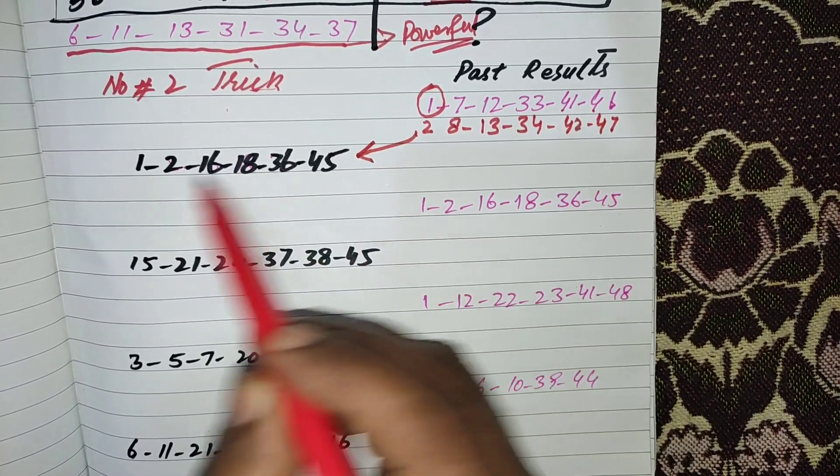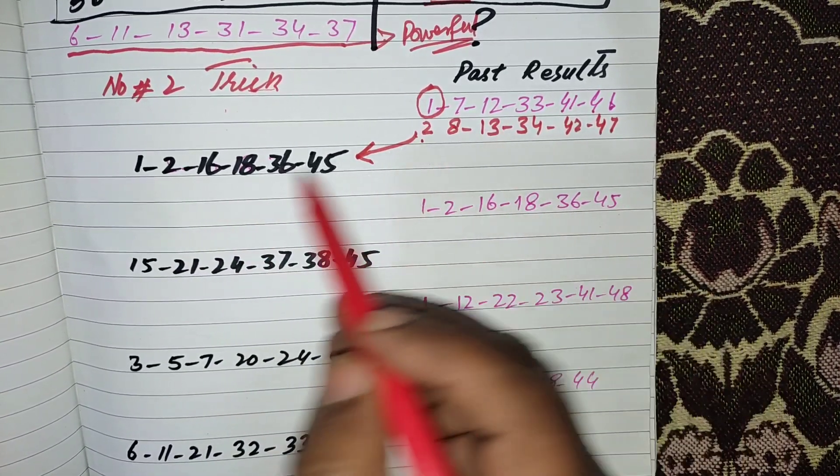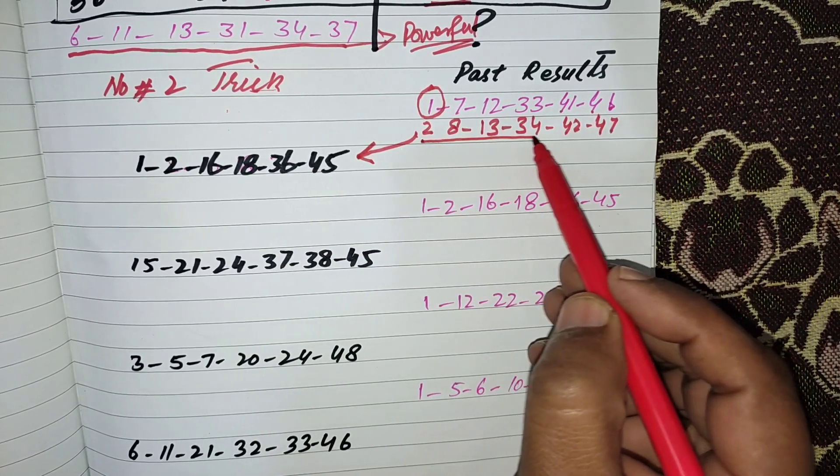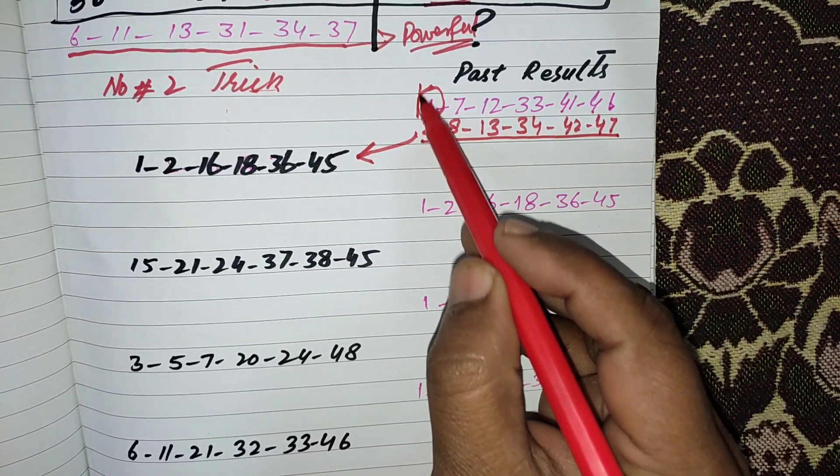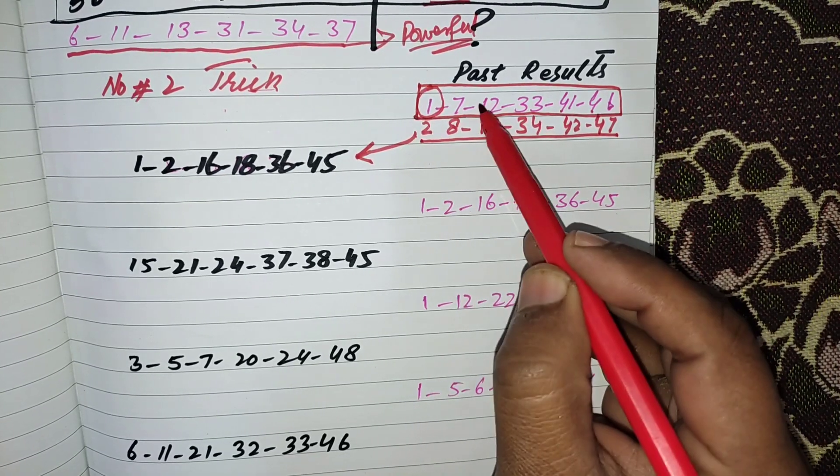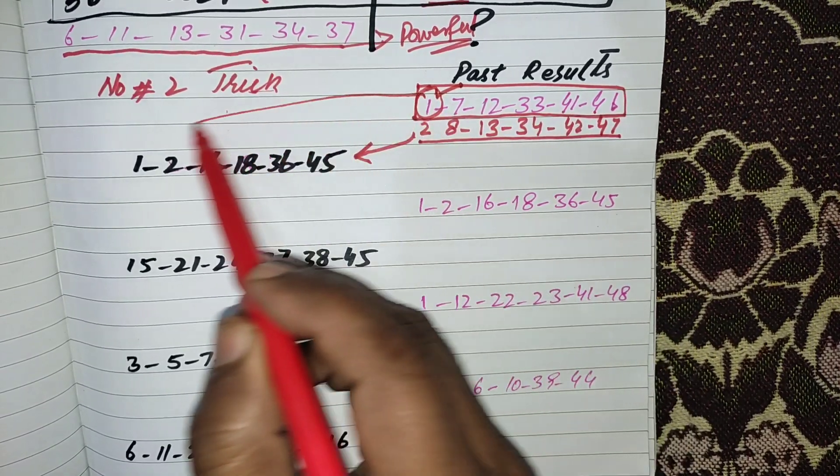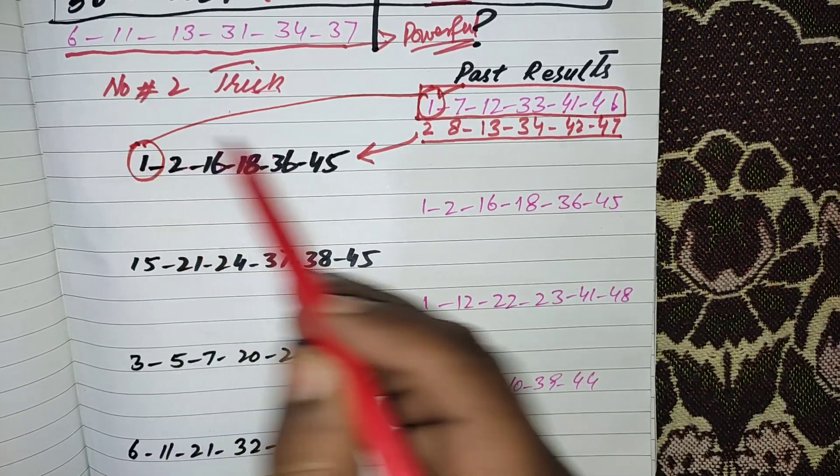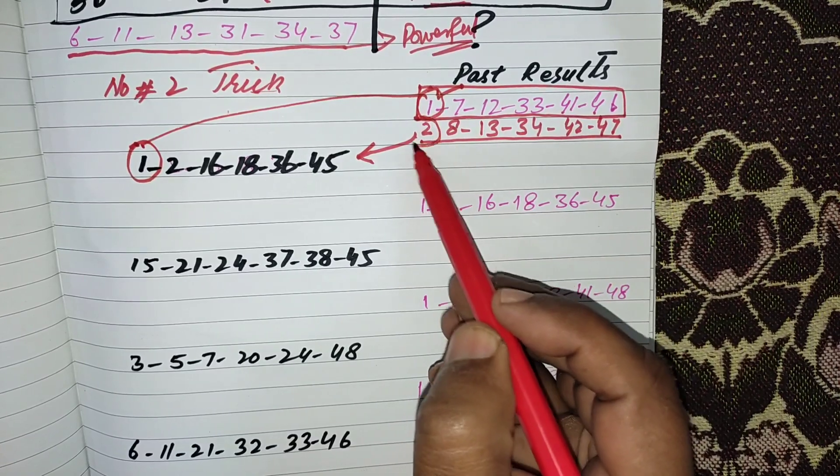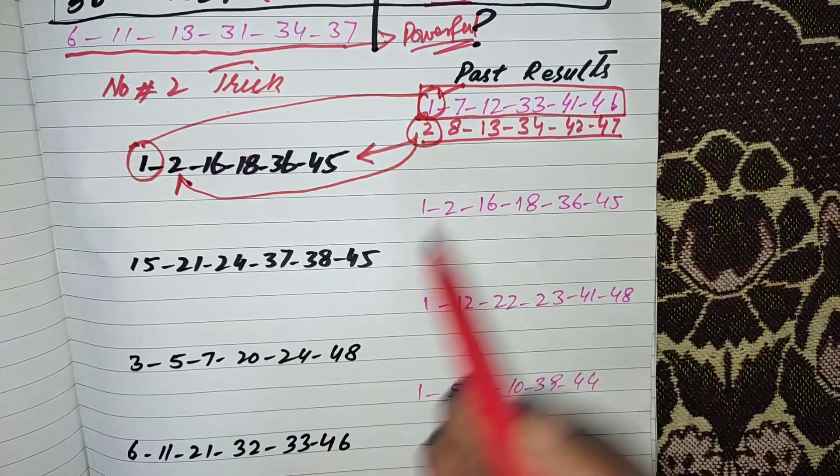Now this is the next result: 1, 2, 16, 18, 36, 45. According to this trick, one number should come from these numbers and one number will repeat from the actual previous result. For example, 1 you can see is repeat in extra, and 2 also came in the next result.